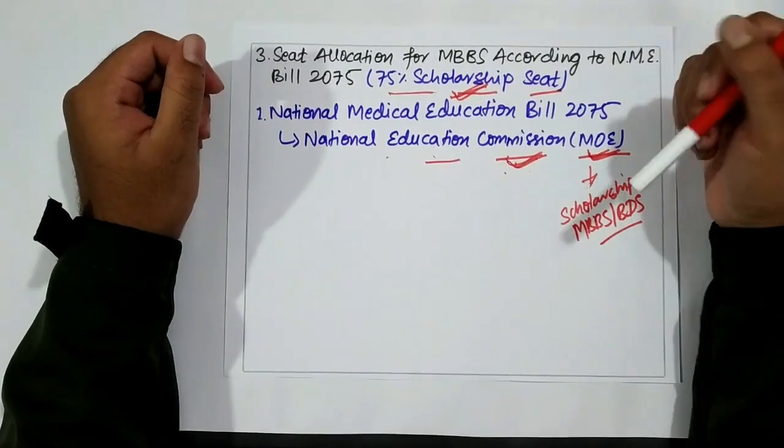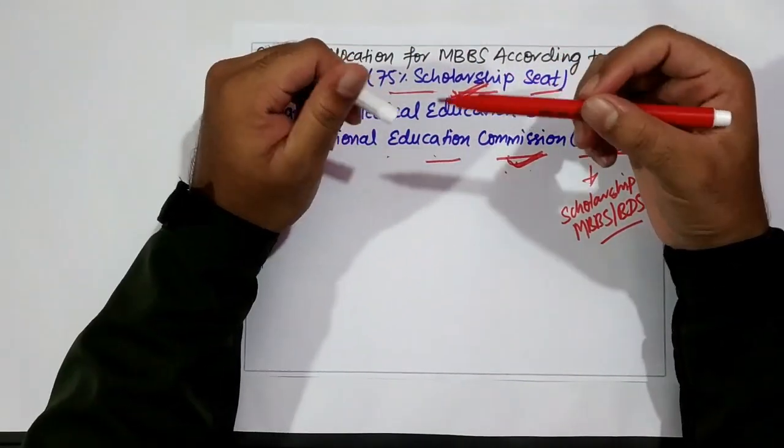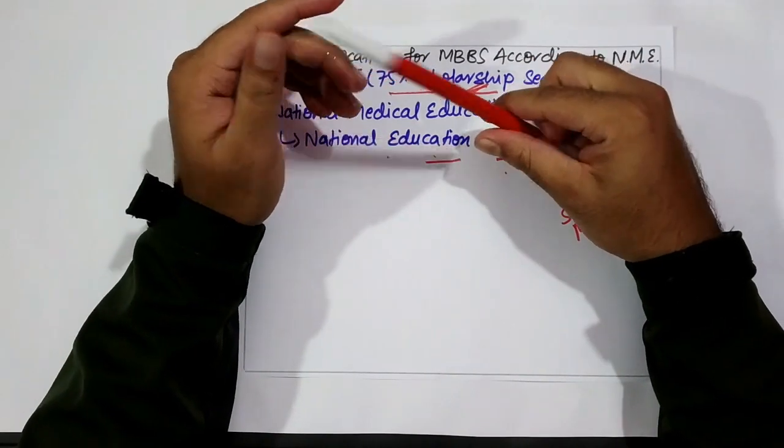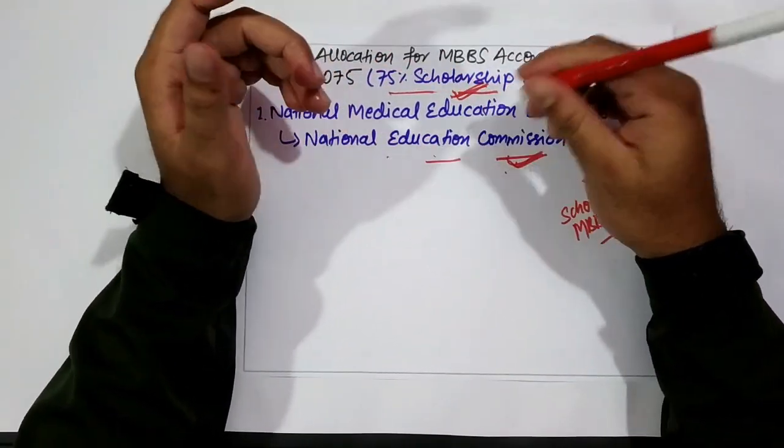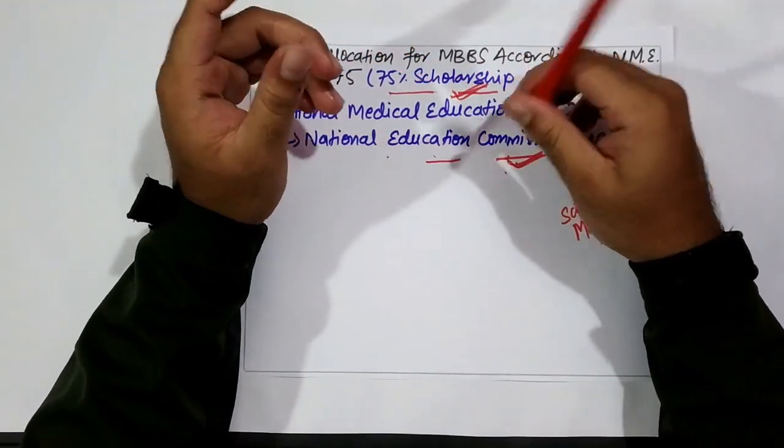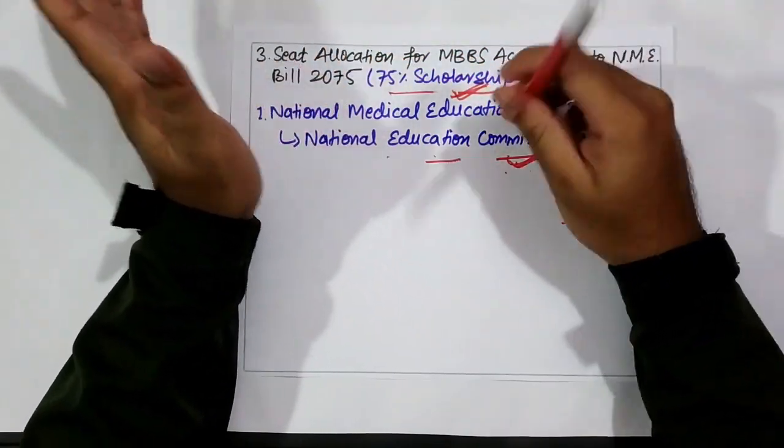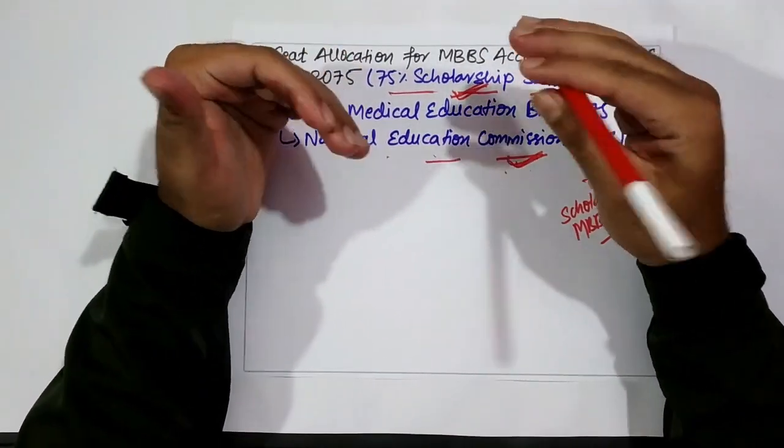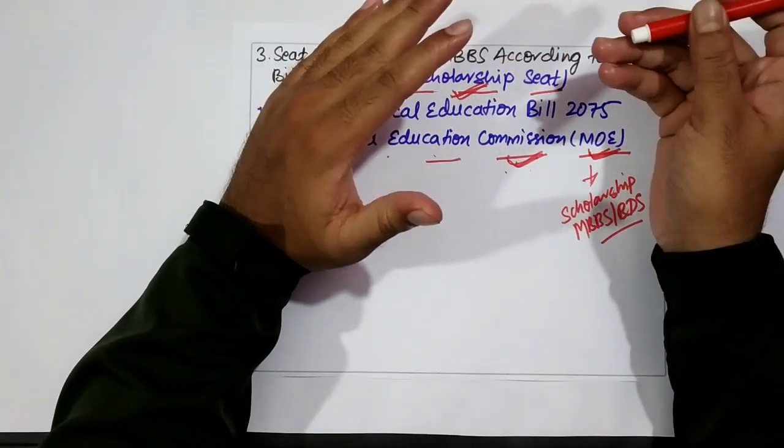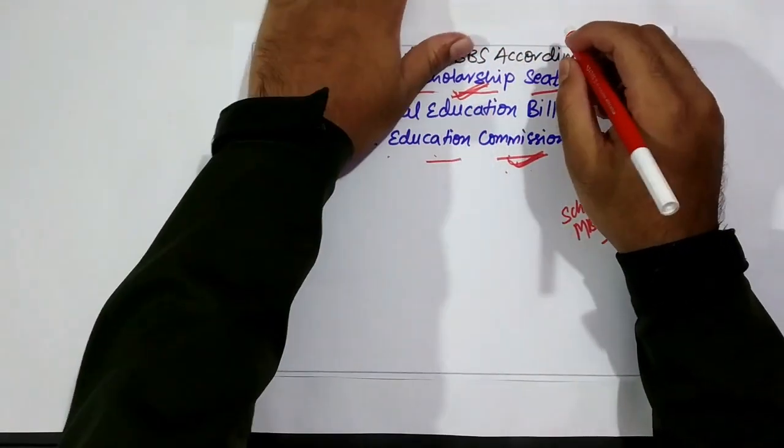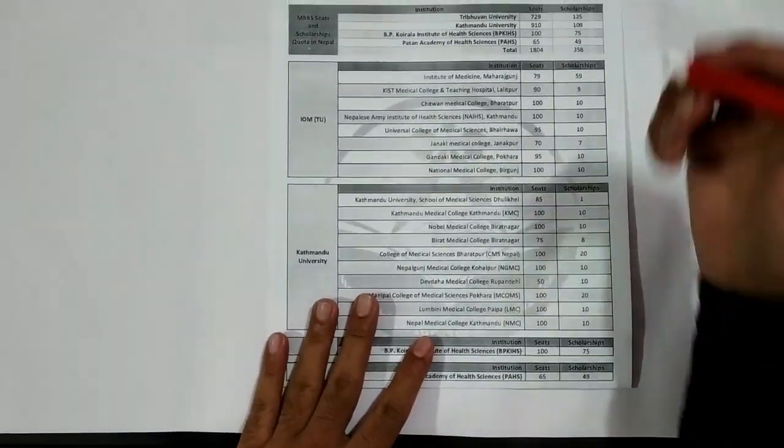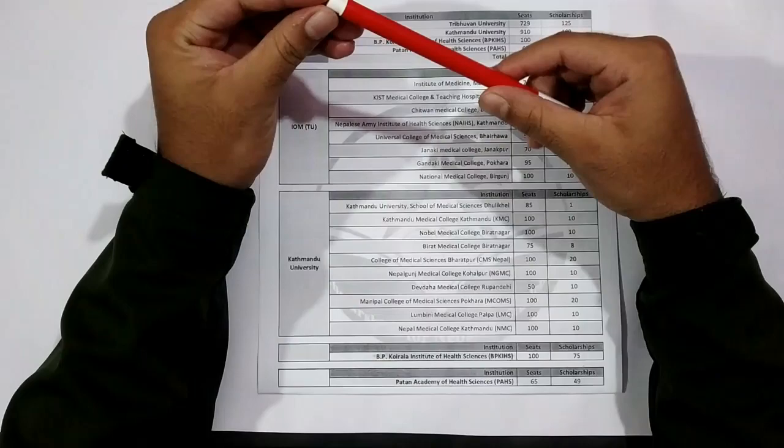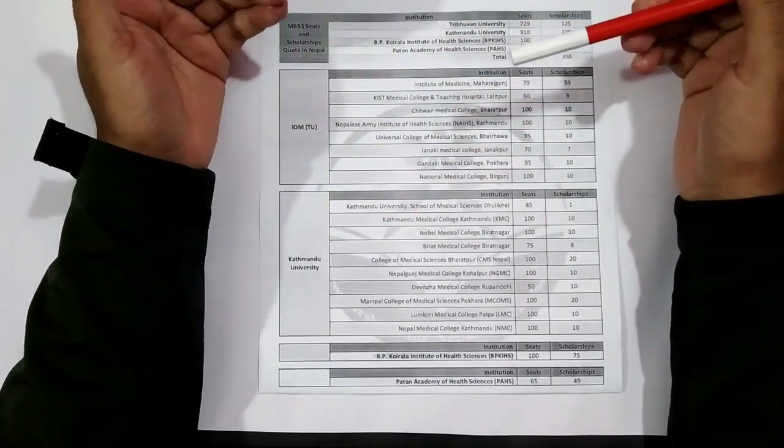On the date when MOE published its notice, different news portals also published articles about the number of seats that have been allocated. Different unofficial sources also provided the number of allocations to different medical universities and colleges. When I gathered all this information, I found that everything was the same. If you look at this, this is also one of the unofficial sources, but it matches with that information.